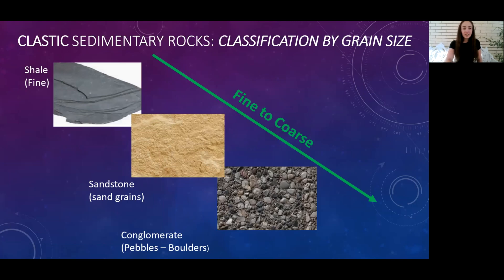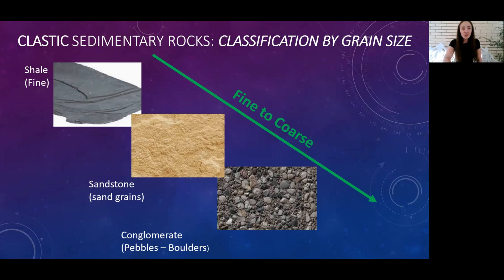The grain size of shale is very fine — we call it shale, mudstone, or claystone. Mud and clay are terms that define grain size; they're so fine you couldn't see individual grains with your eyes — you would need a microscope. Moving up to sand-sized grains, these form rocks we call sandstone. Then we go to really coarse-grained pebbles or boulders, which can be compacted and cemented together into rocks we call conglomerates or breccias.